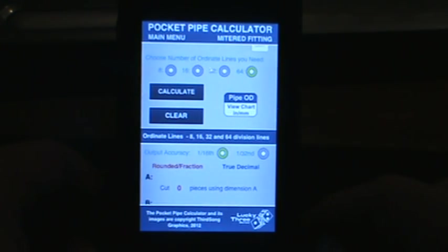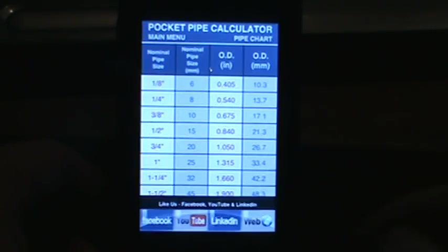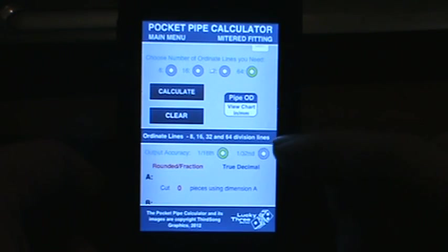You can choose the number of ordinates. There is a pipe chart button to give you ODs for metric and standard.